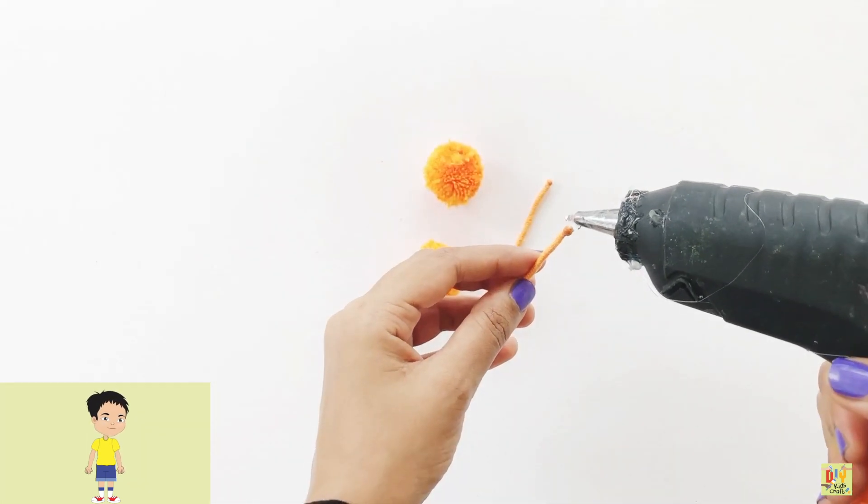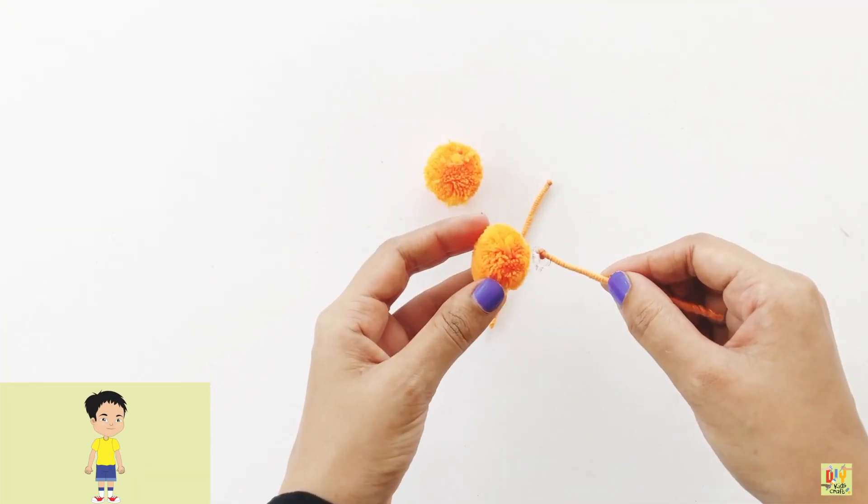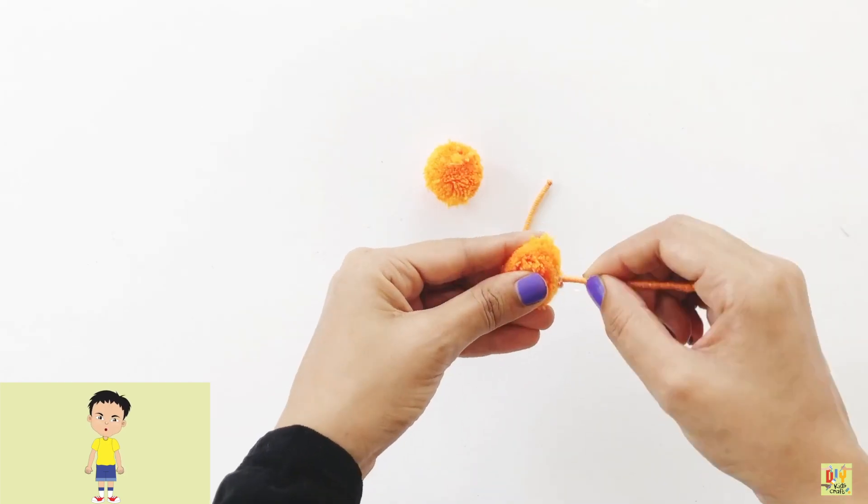Use a glue gun and attach the fuzzy wire. Same goes with the other one.